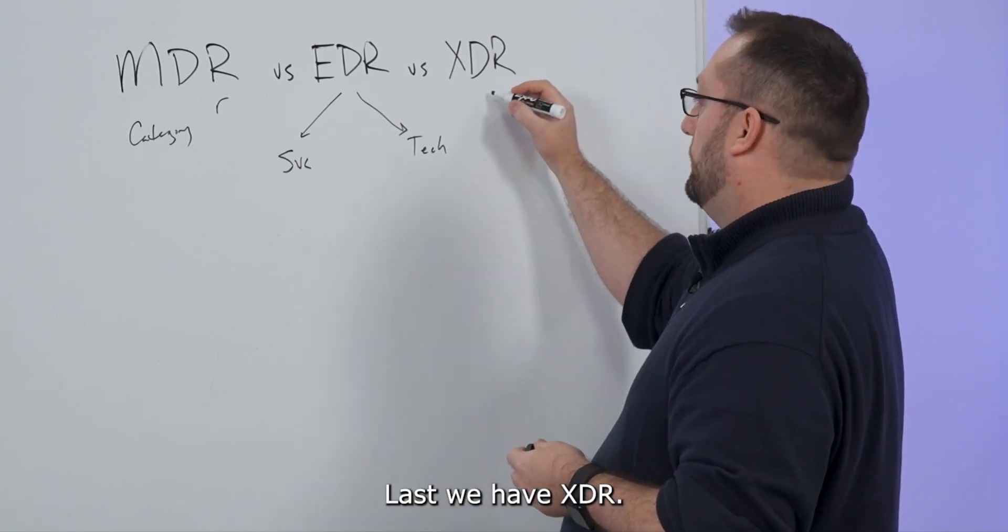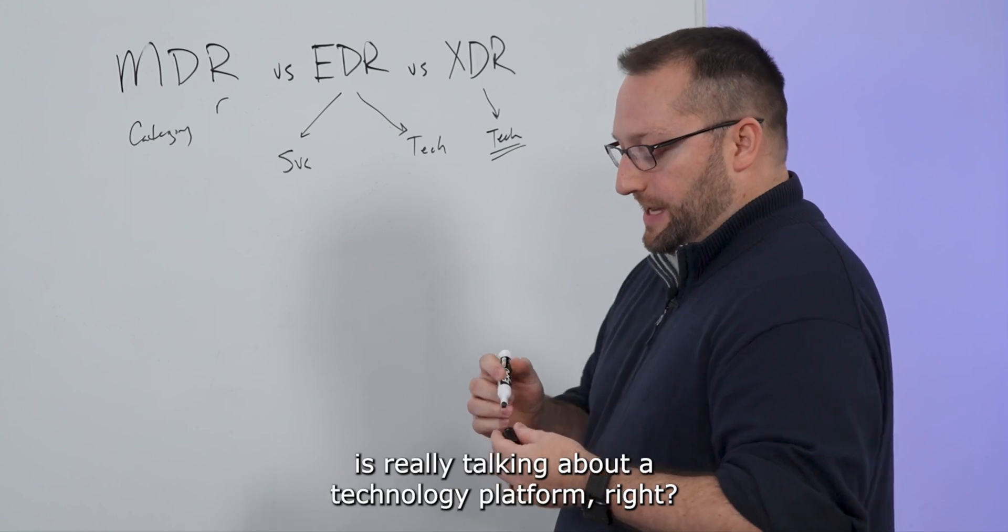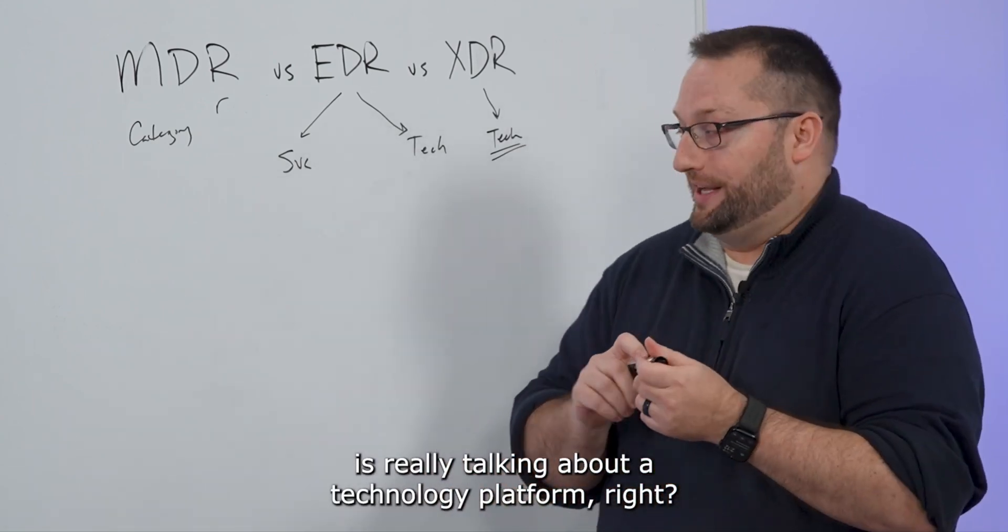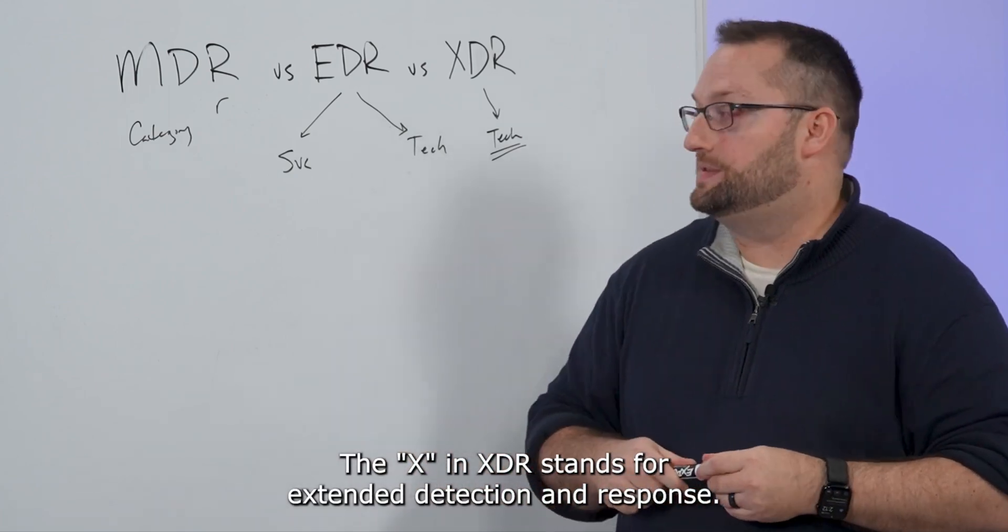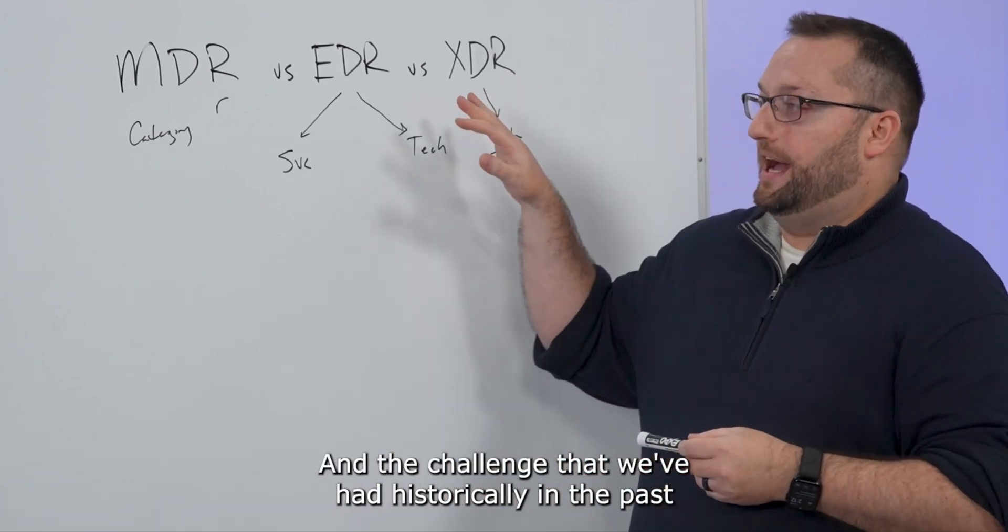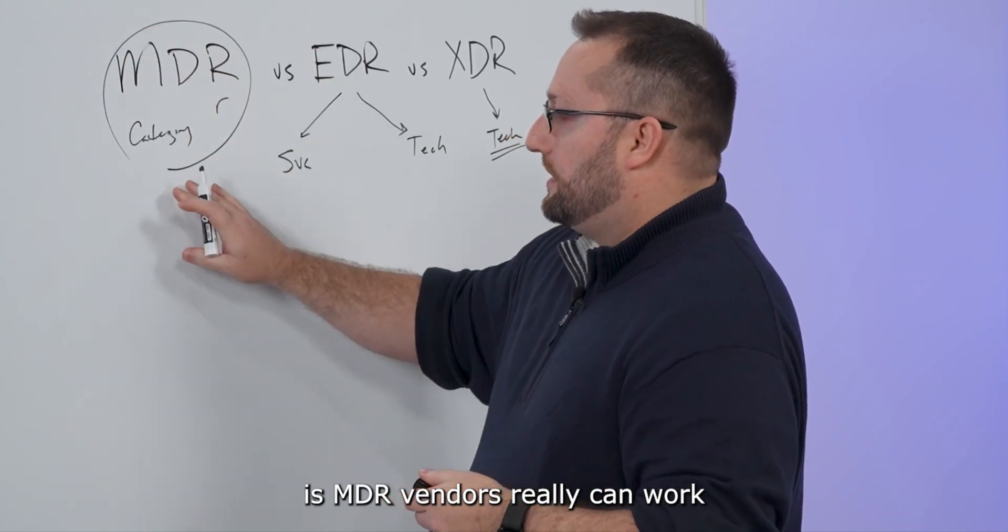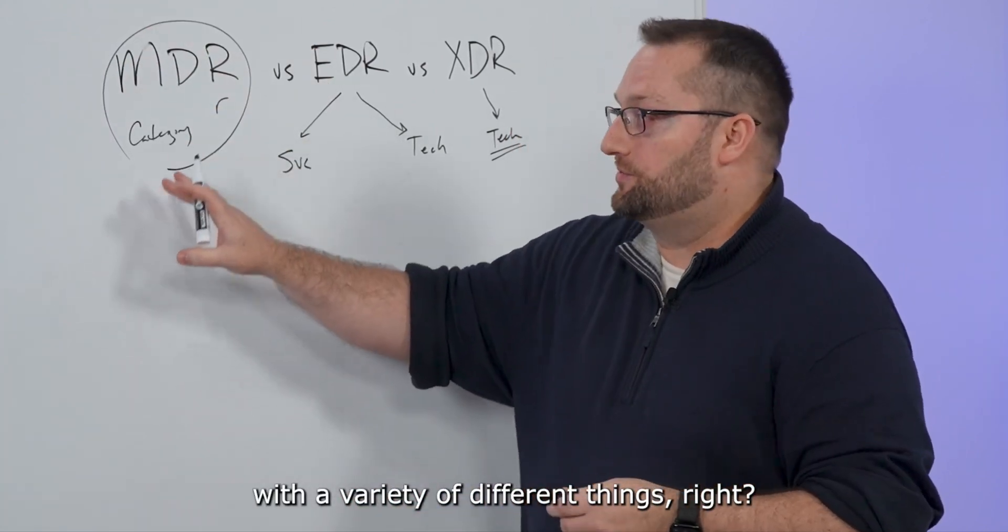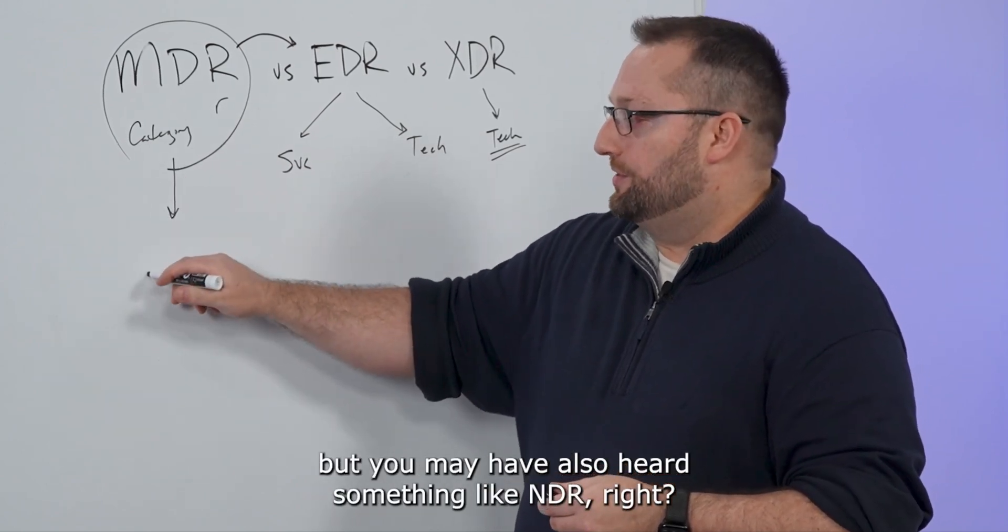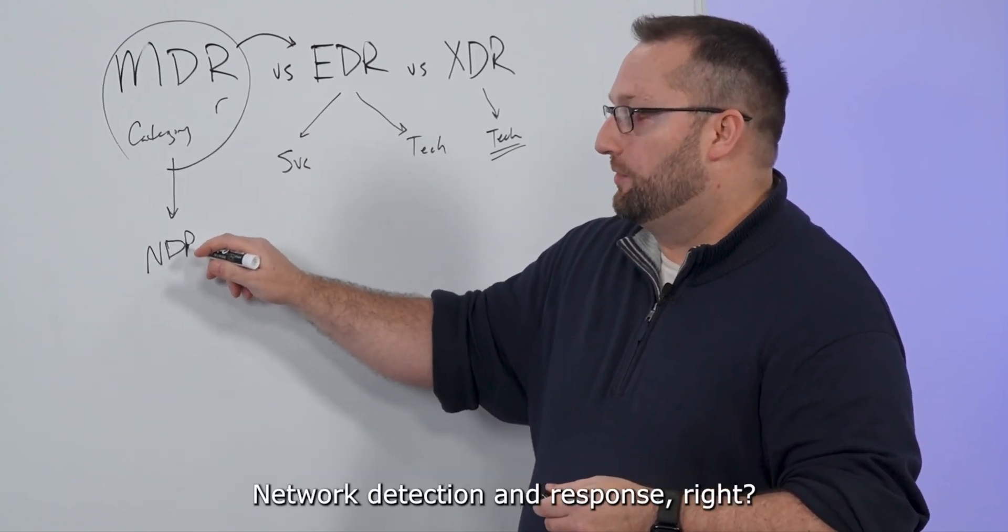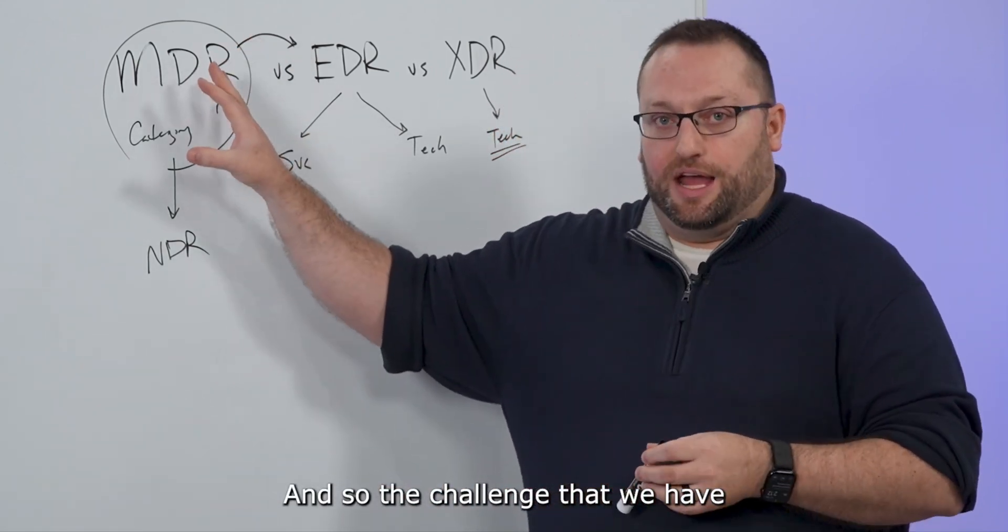Last, we have XDR. And the thing to understand about XDR is this is really talking about a technology platform. The X in XDR stands for extended detection and response. And the challenge that we've had historically in the past is MDR vendors really can work with a variety of different things. Obviously, we talked about their connection to EDR. But you may have also heard something like NDR, network detection and response.